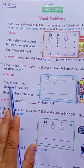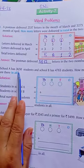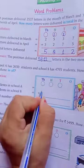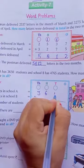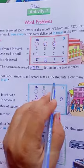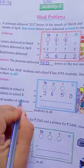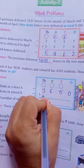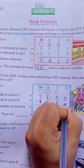Now, in solution, you have given students in school A. How many students in school A? 3,650. So, write here 3,650. Okay. And school B has 4,765. So, students in school B is equal 4,765.